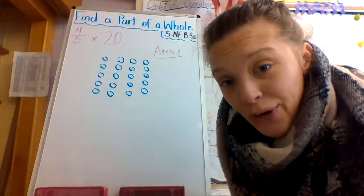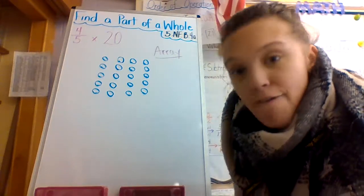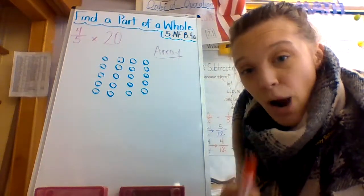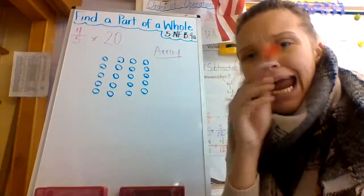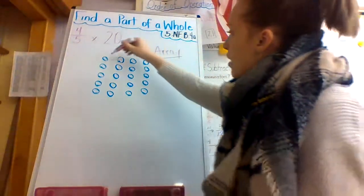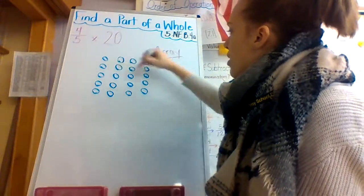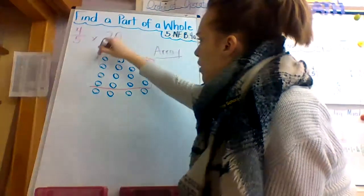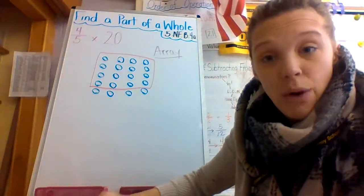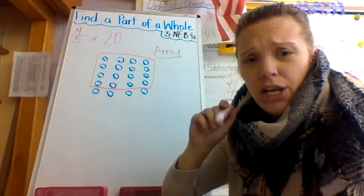Now if you look in the numerator, you'll see that the numerator is four. So I'm going to count off the first four rows of my array and I'm going to box it. One, two, three, four. I'm going to box my array.